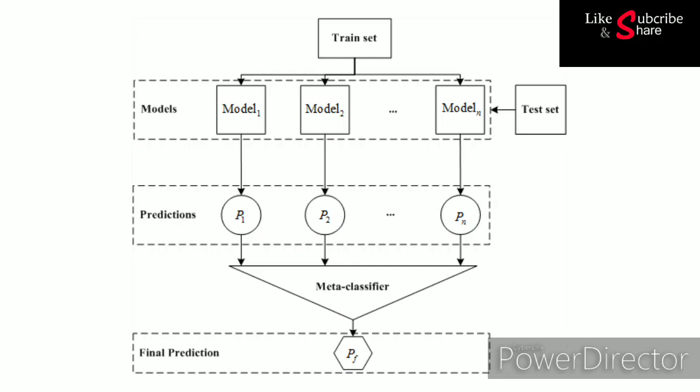The next layer does not use the original training dataset. Instead, it uses the features extracted from the first layer of models, which are basically prediction probabilities. Finally, we extract the probabilities from the second layer and average all these probabilities from all the models in the second layer to get a single probability for each observation.